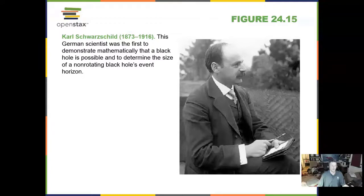This is Carl Schwarzschild. He was a German scientist and the first to demonstrate mathematically that a black hole is possible, and to determine the size of a non-rotating black hole event horizon. What is an event horizon? As you get near a black hole, the event horizon tells you that if you go past it, you're not coming back — you will not escape the black hole's influence.